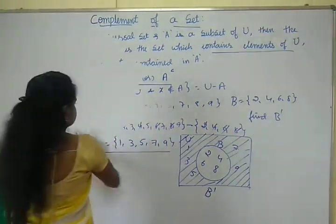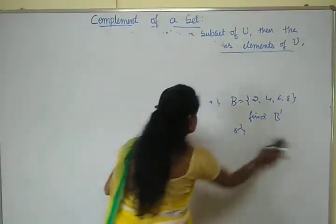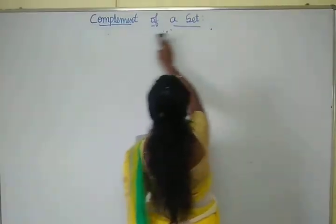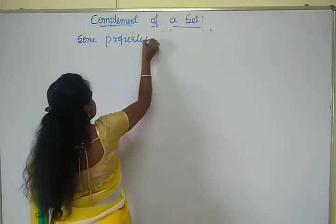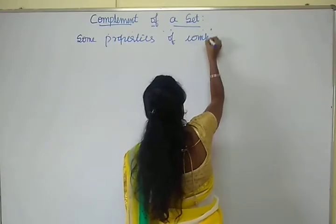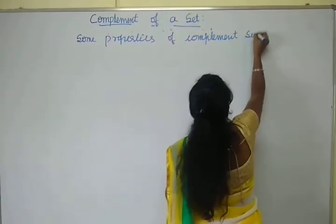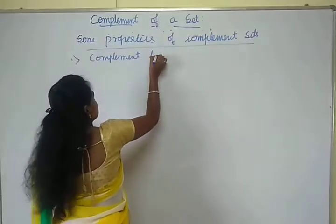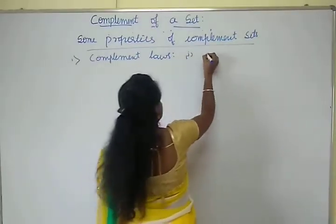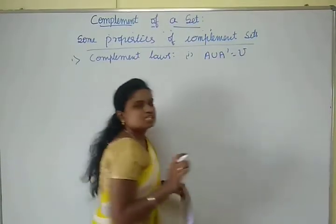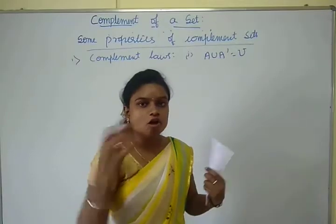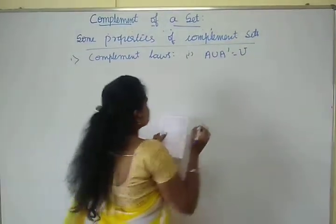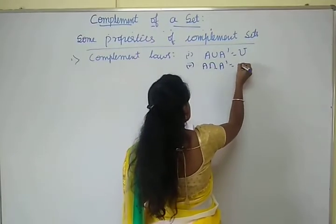Now some properties of complement of a set. The first property is the complement law. First: A union A dash is equal to the universal set U. When you take the union of A and its complement, you get the universal set. The second one is: A intersection A dash is equal to the empty set.